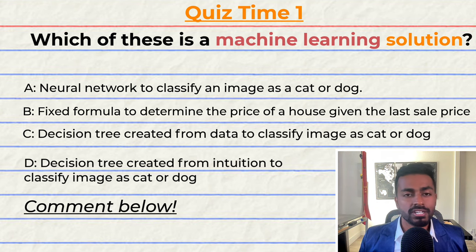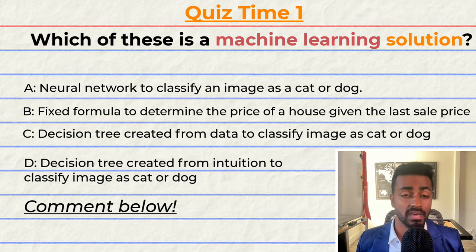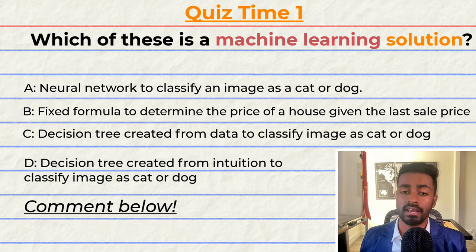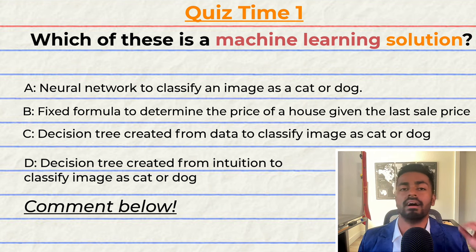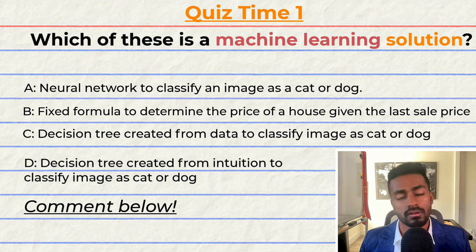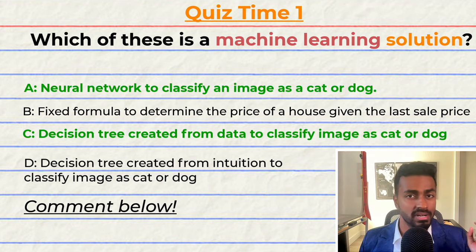Quiz time! Have you been paying attention? Let's quiz you to find out. Which of these is a machine learning solution? A: a neural network to classify an image as a cat or a dog. B: a fixed formula to determine the price of a house given the last sale price. C: a decision tree created from data to classify an image as a cat or a dog. Or D: a decision tree created based on intuition to classify an image as a cat or a dog. Note that multiple options may be correct. The correct answers are A and C. But can you tell me why? Give your reasoning down in the comments below — I would love to hear your thoughts.